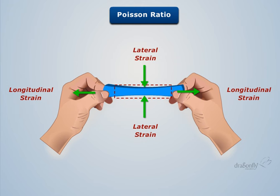Now, when we take the negative ratio between this lateral strain and the longitudinal strain, we get Poisson's ratio.